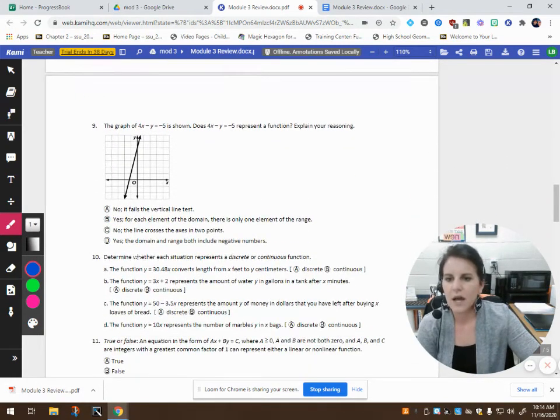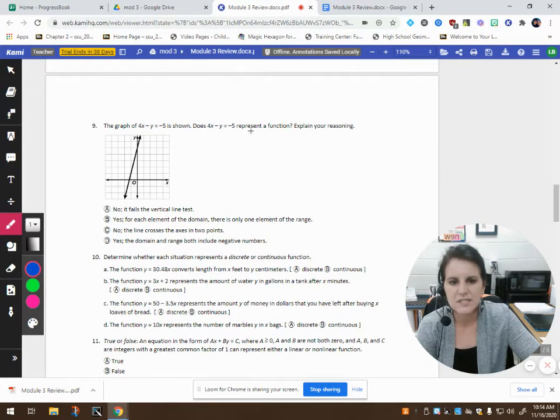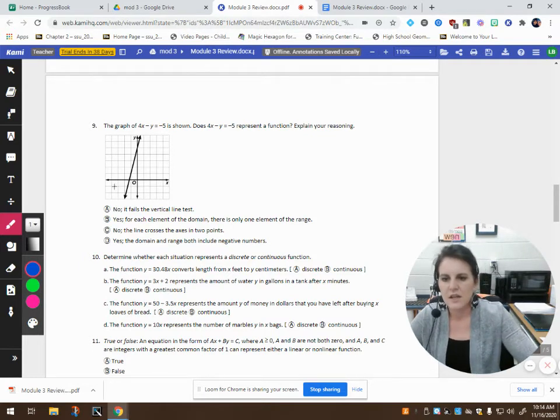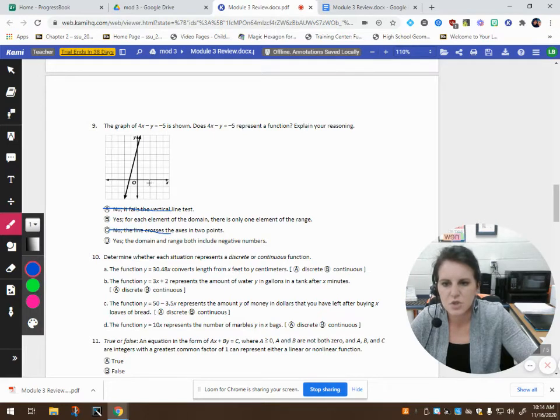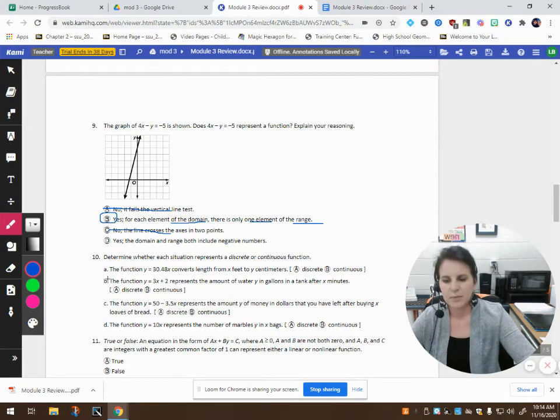Alright, number 9. The graph of 4x - y = -5 is shown. Does this represent a function? And the answer is yes. Of course, it represents a function. Because if I was to draw in a vertical line, it passes the vertical line test. So, what does that mean? Well, that means for each element of the domain, each x value, there is only one y value. There's only one element of the range. Okay, so B is the correct answer.